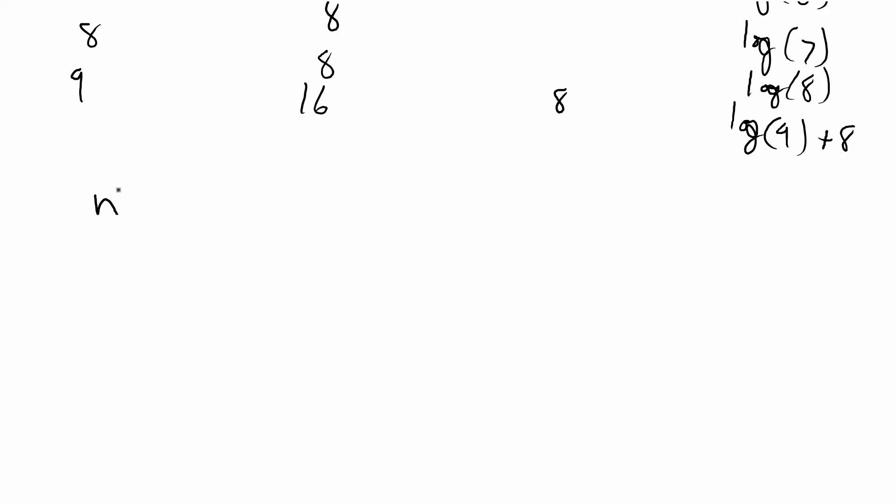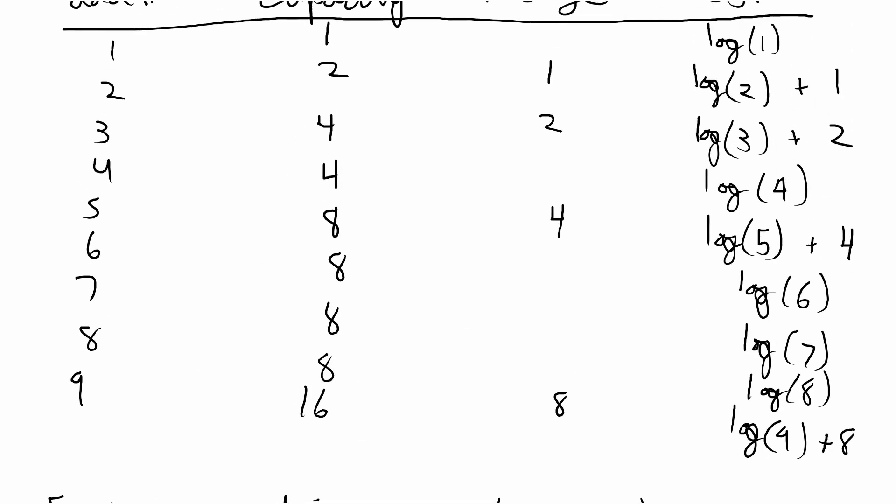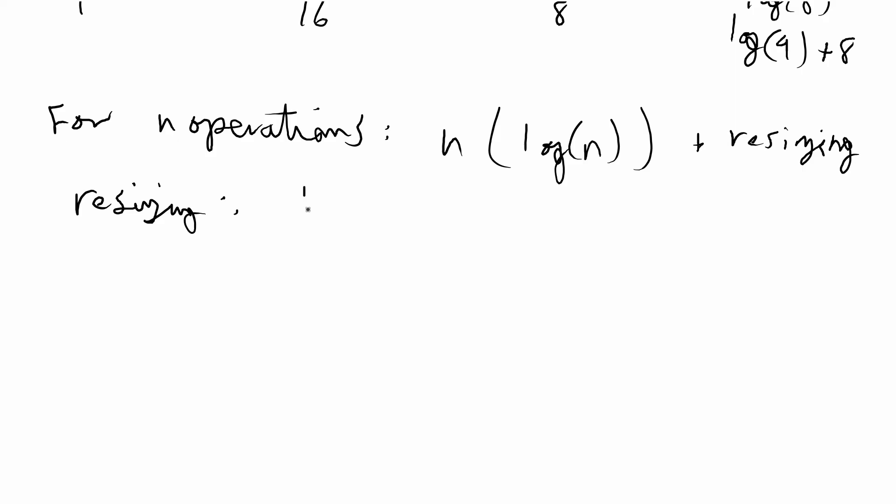For n total operations you see that the cost is log of n and we're doing this n times plus the cost of resizing. The resizing pattern is essentially 1 plus 2 plus 4 plus 8 and it's that sequence of numbers, essentially doubling each time. And the formula for that is going to be 2n minus 1.